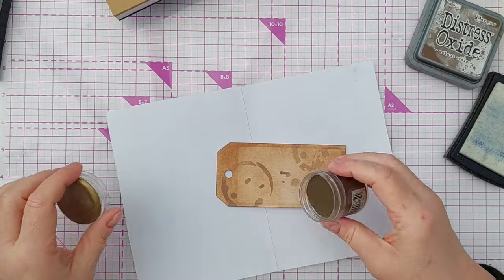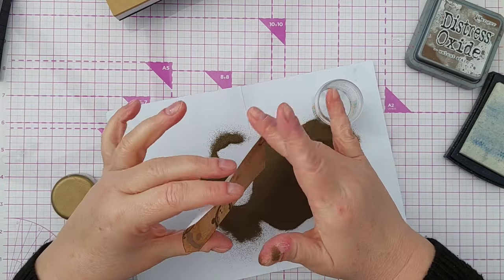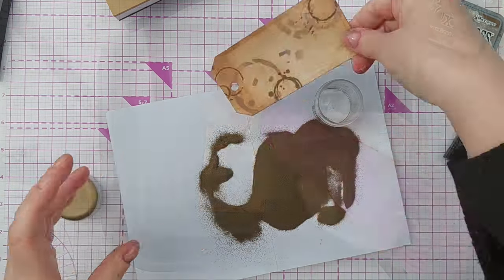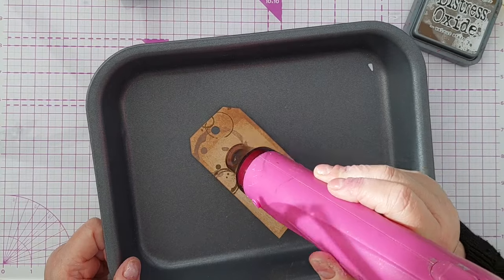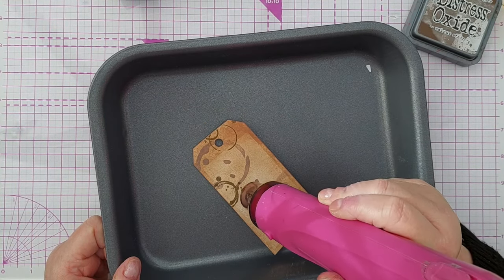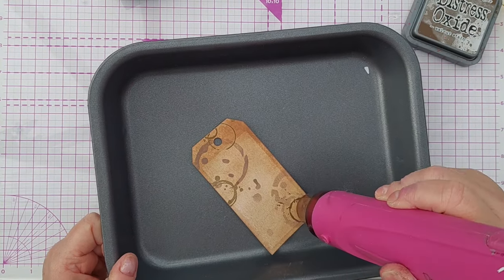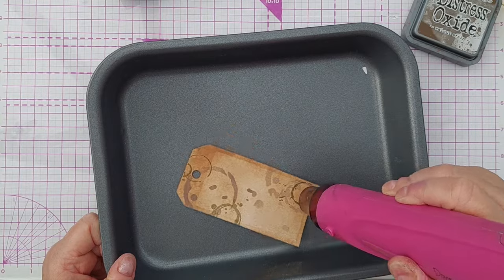And after that I added some gold embossing powder. This isn't my usual bright detail gold powder, this is a very vintagey antique gold powder which I felt would look better on this coffee themed tag. So after adding the powder I heated it with my heat tool in my non-stick tray.